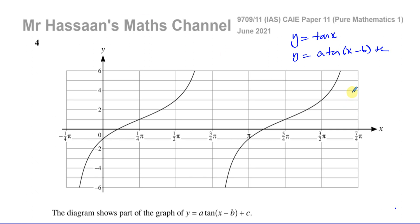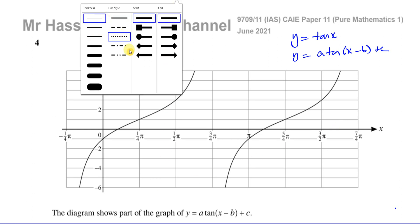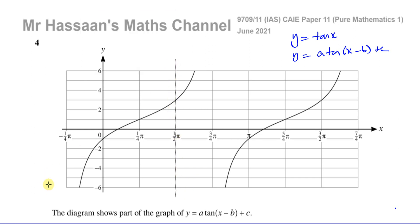But what we can work out quite simply in this case is the horizontal shift that's taken place. We could do that by looking at, for example, the asymptotes. Now, the asymptotes on the tan curve, we know, are pi over 2 and minus pi over 2 and so on, and 3 pi over 2, pi over 2 and 3 pi over 2. So we can see that here if you carry on this graph, it looks like the asymptote has moved to 3 pi over 4.